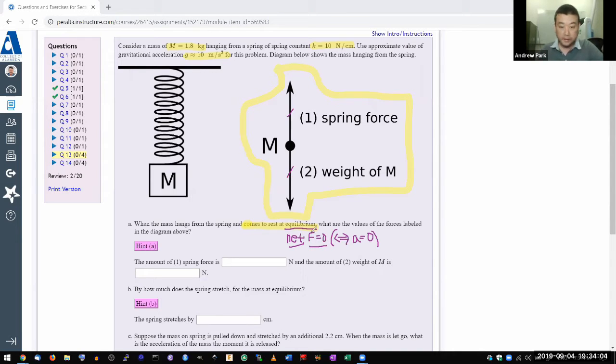It asks for the amount of spring force. I don't have any idea what that is, so let me skip that for now. Weight of M, that I know. The textbook said weight of some object equals mass times g. I have the mass of 1.8 kilograms and 10 meters per second squared.